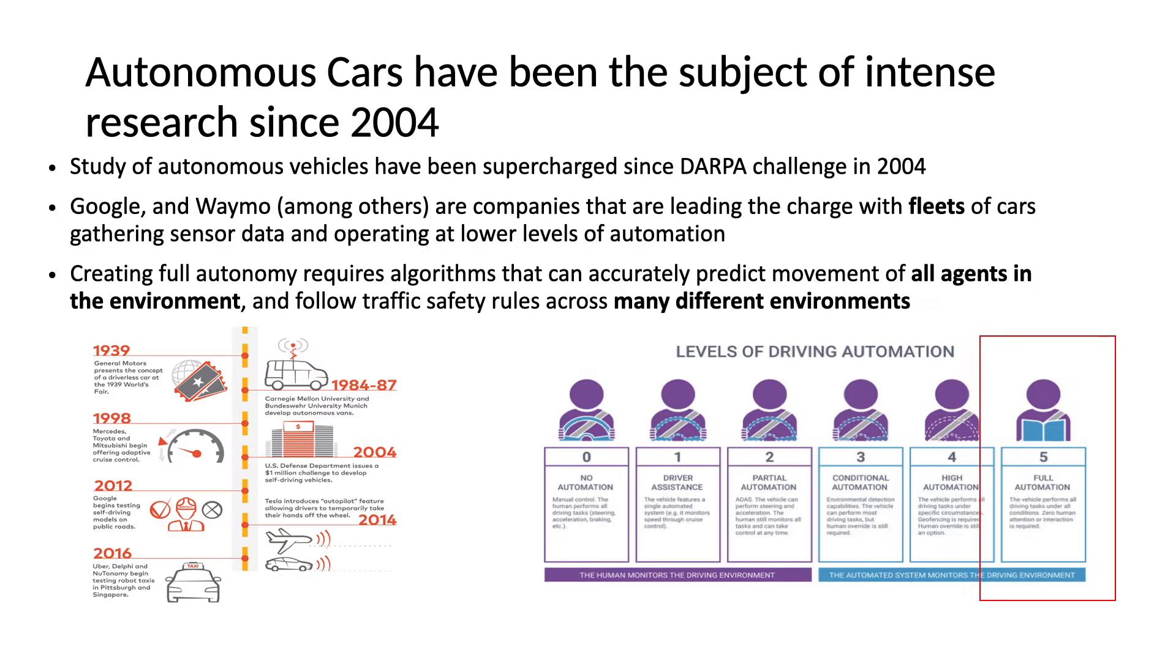The study of autonomous cars really kick-started in 2004 with the DARPA Challenge, which was set by the Department of U.S. Defense, where a lot of the teams were tasked with creating driverless vehicles that could go through a 150-mile course. The winner at that time actually only went 7.32 miles. But since then, there's been a lot of research, and we've come a long way.